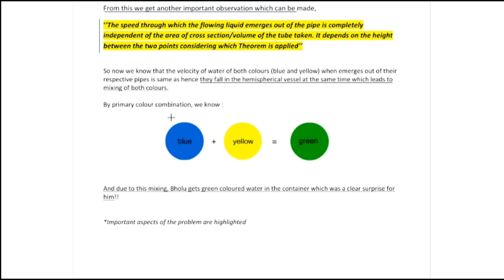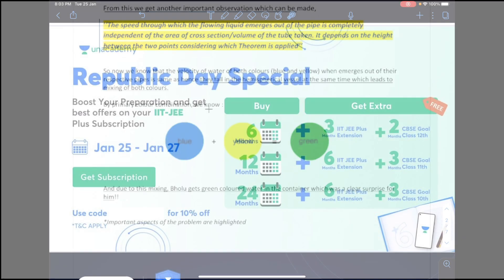From primary color combination we know that blue plus yellow gives us green color water. Due to this mixing, Bholu gets green colored water in the container, which was a clear surprise for him. I hope you enjoyed this solution as well as the problem. Thank you so much for your time — make sure to subscribe to Indian School of Physics.